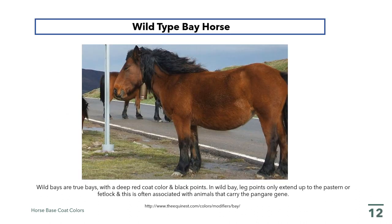Here is a photo of a horse that exhibits a wild type bay. The wild bays are considered to be true bays, with a deep red coat color and black points, but in the wild bay, the leg points only extend up to the pastern and the fetlock. This is often associated with animals that carry the pangari gene.